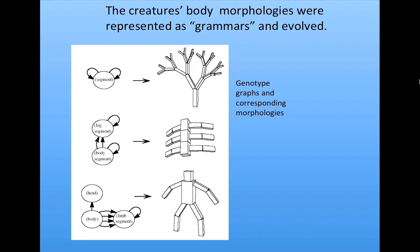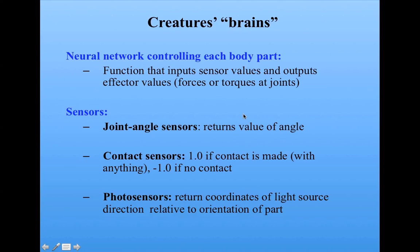As I mentioned, the algorithm evolves both the morphologies of the bodies and the neural networks that control the bodies. The creature's body morphologies were represented as grammars — repeatable little programs that can produce repeated structures like these. The brains, or the neural networks, were networks of neurons. The neural network had an input of sensor values and output effector values, which were forces on the joints.